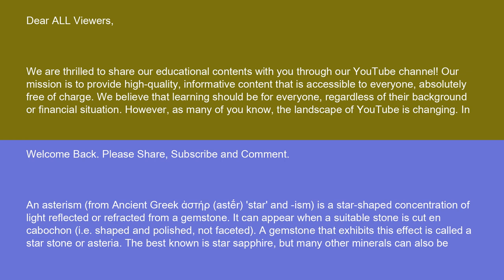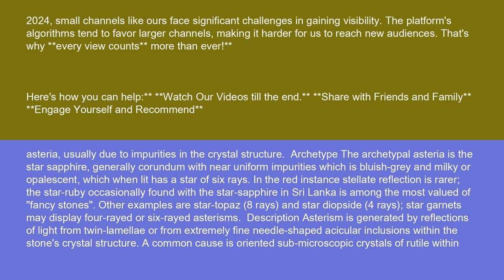The best known is star sapphire, but many other minerals can also be asteria, usually due to impurities in the crystal structure. The archetypal asteria is the star sapphire, generally corundum with near-uniform impurities, which is bluish-gray and milky or opalescent, and when lit has a star of six rays. In the red, stellate reflection is rarer. The star ruby, occasionally found with the star sapphire in Sri Lanka, is among the most valued of fancy stones. Other examples are star topaz with eight rays, star diopside with four rays, and star garnets, which may display four-rayed or six-rayed asterisms.